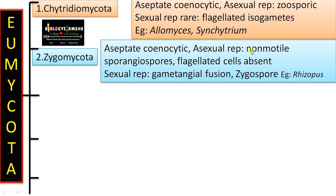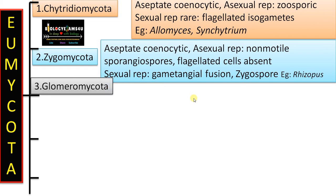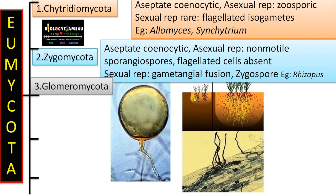To summarize Zygomycota: they have aseptate coenocytic hyphae. Asexual reproduction is by non-motile sporangiospores. Flagellated cells are absent. Sexual reproduction is by gametangial fusion, finally forming a thick resistant spore called a zygospore. The example is Rhizopus.